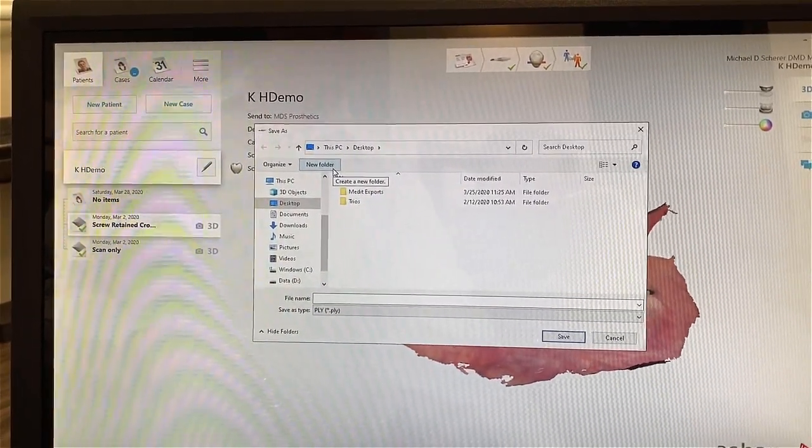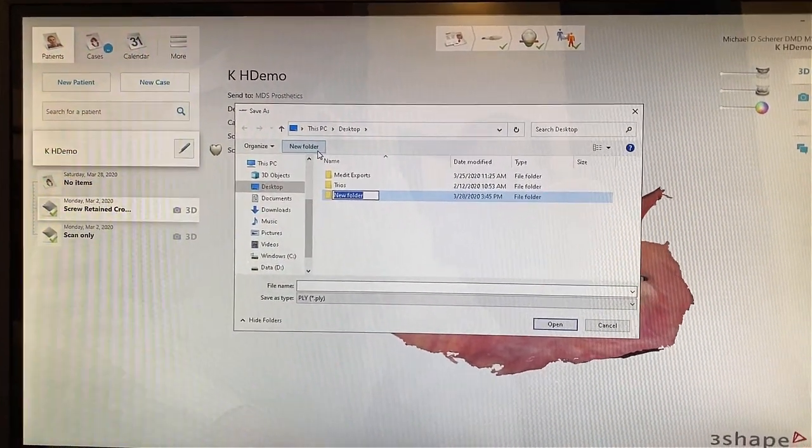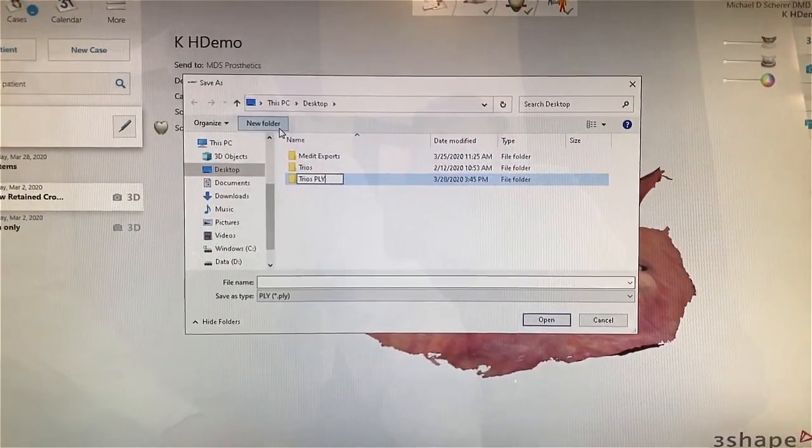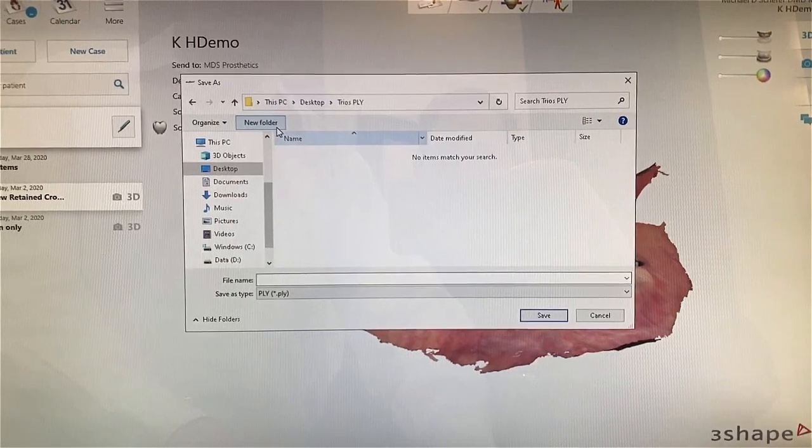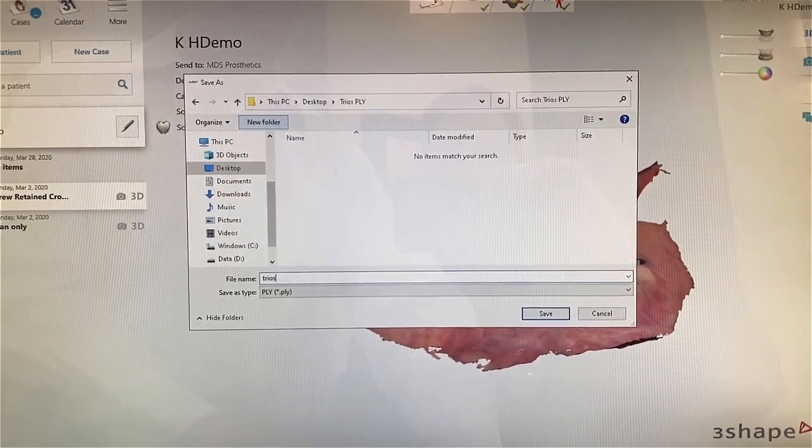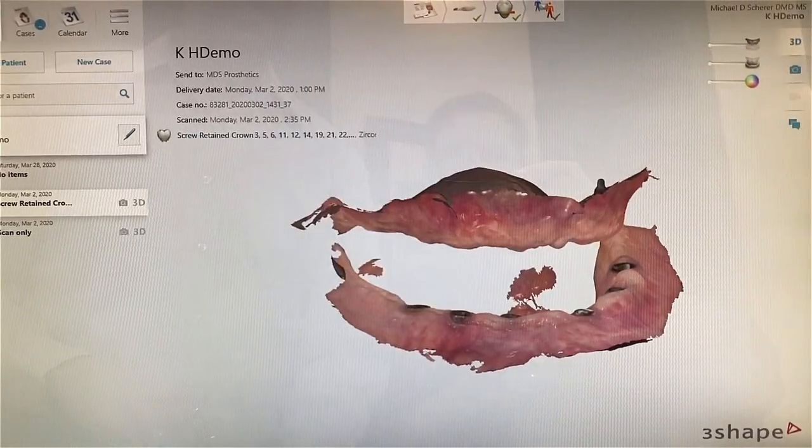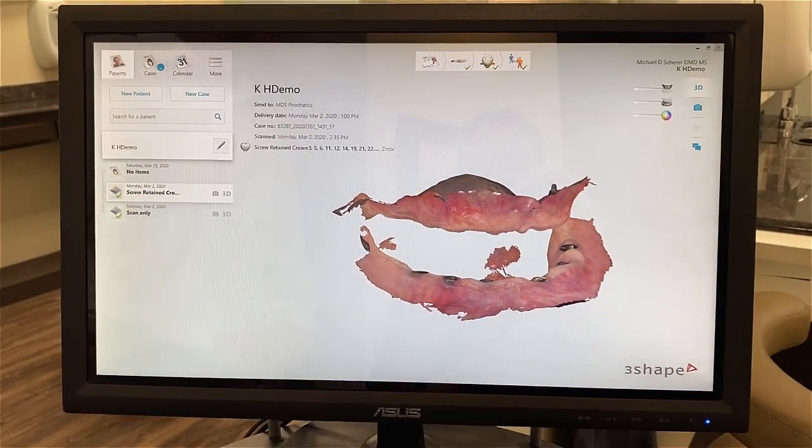So I'm going to go ahead and choose Color PLY, and then I'm going to export to TRIOS PLY, and I'll give it a name like TRIOS PLY, and it will export to my desktop.